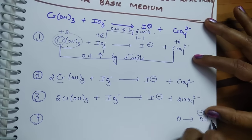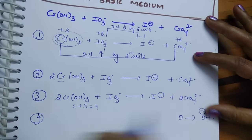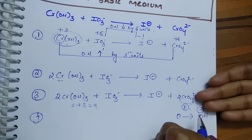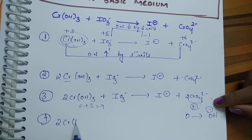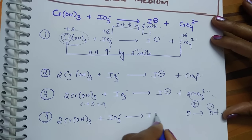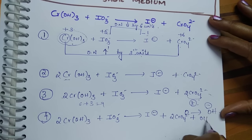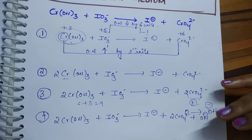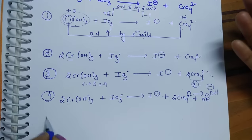Step four: balance oxygen. On the left-hand side there are nine oxygens (3 × 2 = 6 from CrO₂⁻ plus 3 from IO₃⁻), and on the right-hand side there are eight oxygens. The right-hand side is deficient by one oxygen, so add one OH⁻ to the right-hand side. Practicing step by step like this the first few times is helpful; after two or three attempts you can balance reactions more directly.